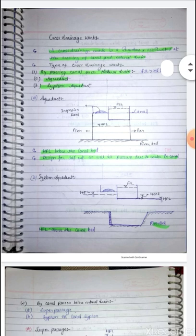Jab kabhi bhi ek natural drain ya canal ko intersect karana hai ya phir do structures ko cross karana hai, to ek structure create kia jata hai — usi kaha jata hai cross drainage structure. Yeh cross drainage work ko teen types mein classify kia gaya hai: number one, CD work carrying canal over the drain or natural stream, jab canal ko river ke oopar se guzara jata hai; second, CD work carrying drainage over the canal, jab natural drain ko canal ke oopar se cross karaya jata hai; aur third, CD work admitting drainage water into the canal.